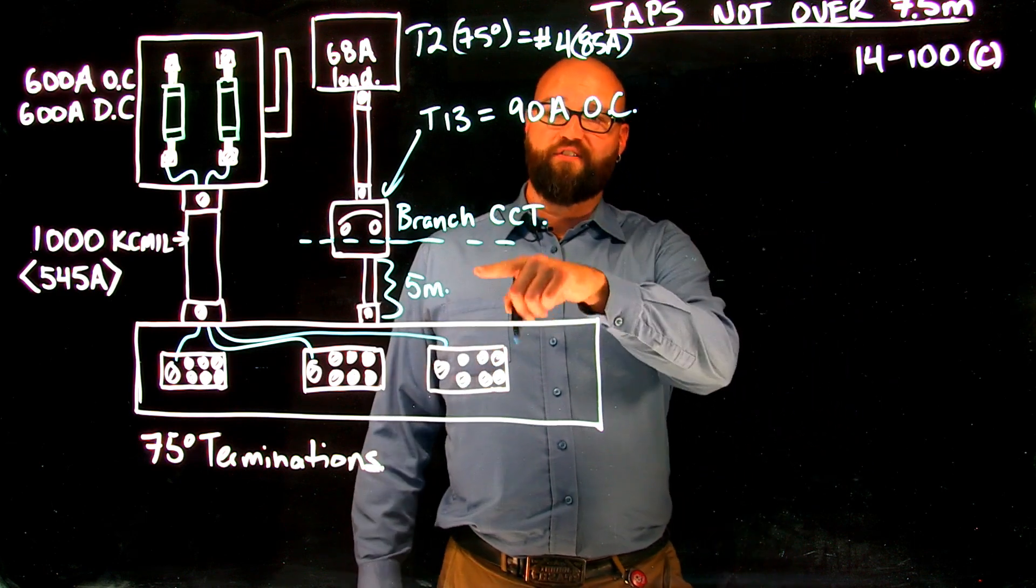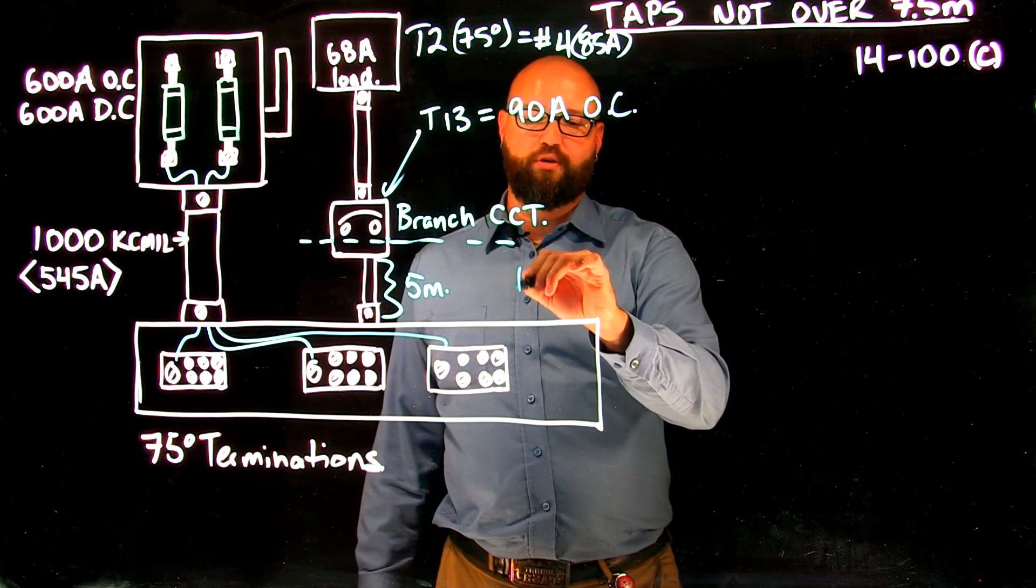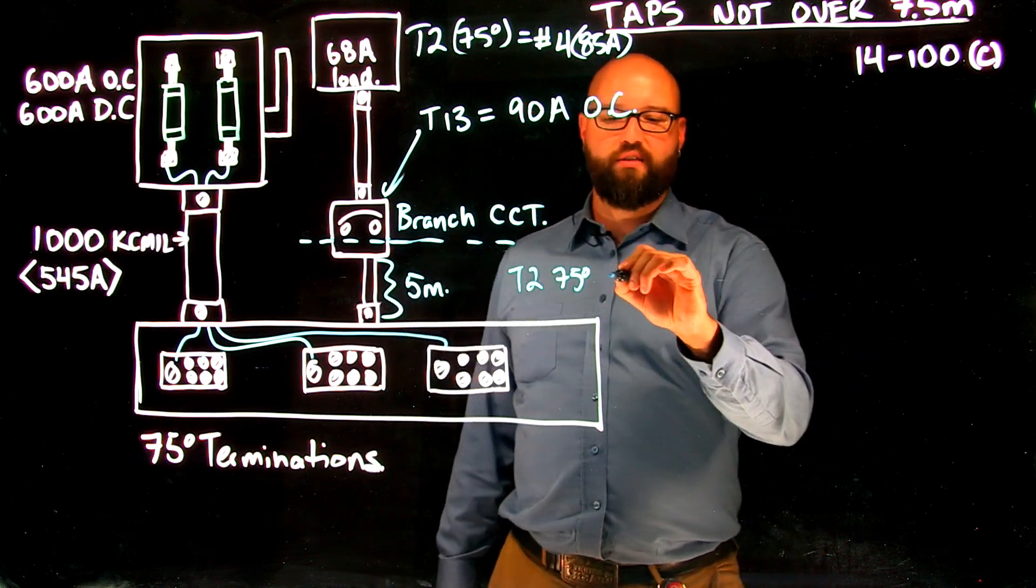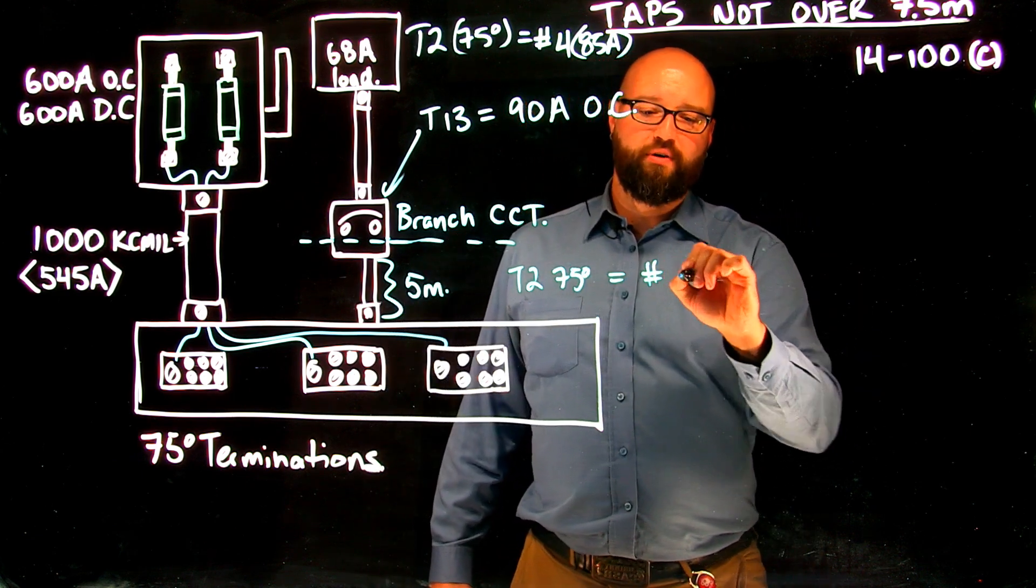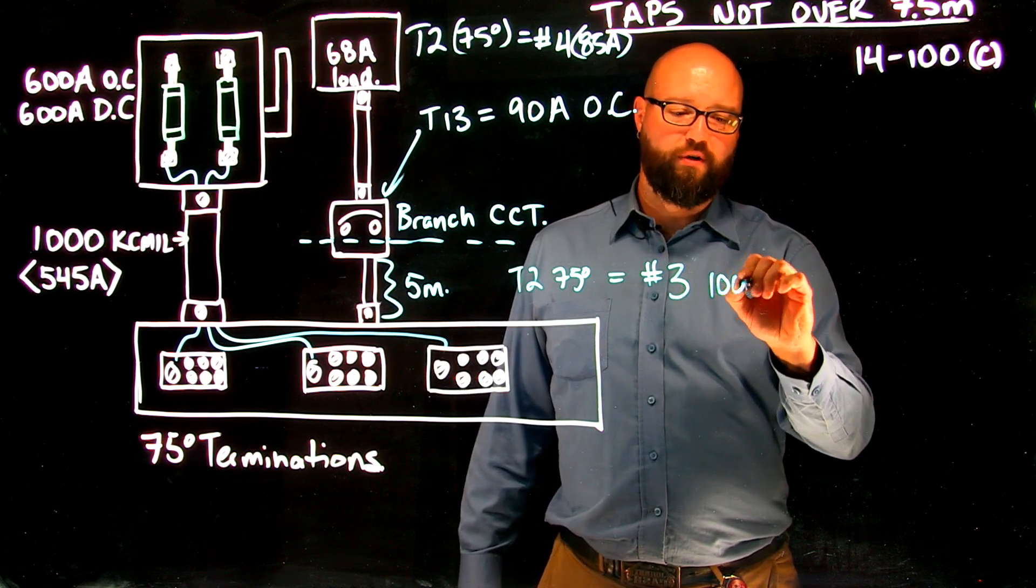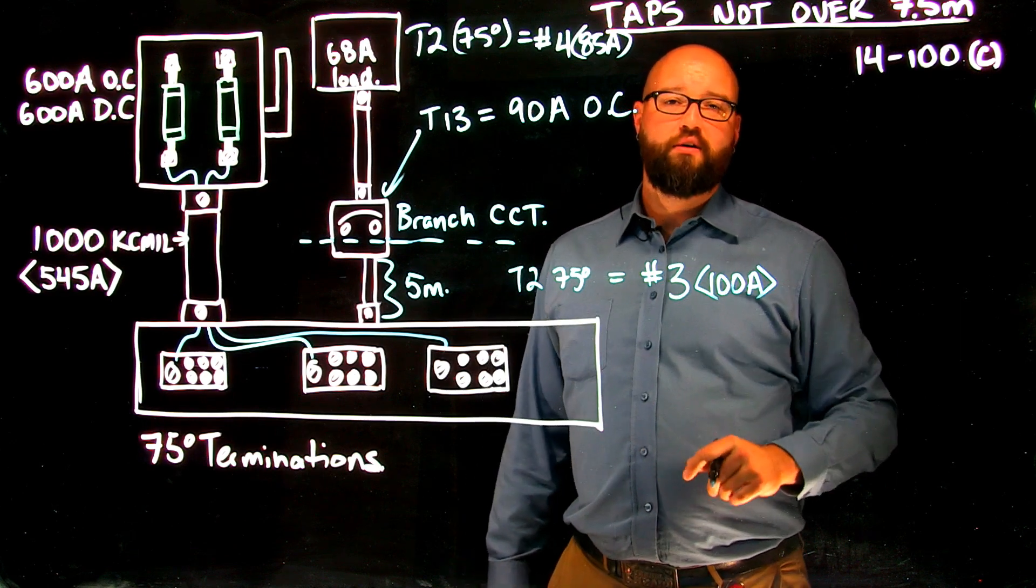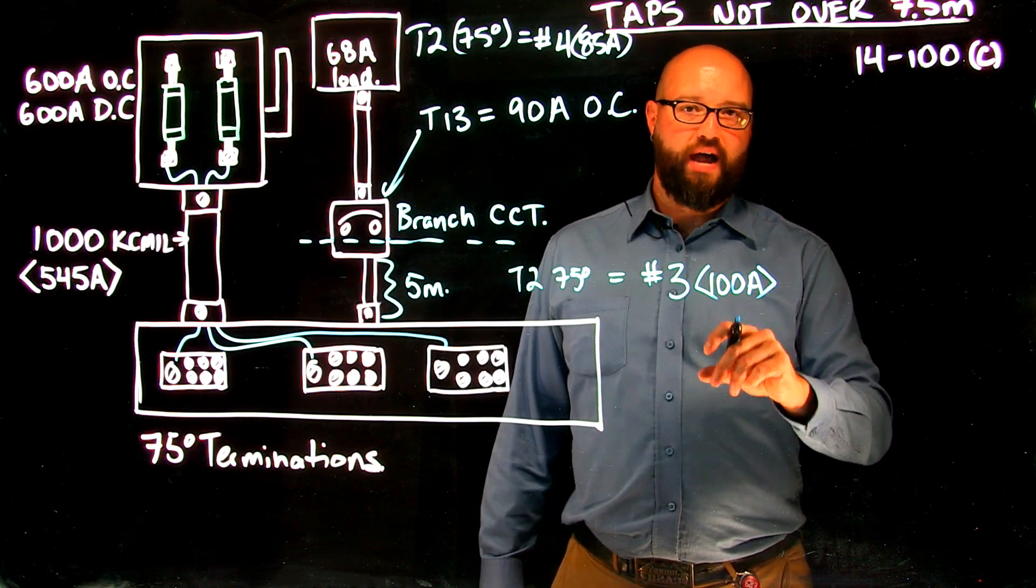We are going to say that if I take that 90 amps to table 2, 75 degree column, I have a choice. I can go with either a number 3, which is good for 100 amps, that is larger than my overcurrent, or one-third the feeder ampacity.